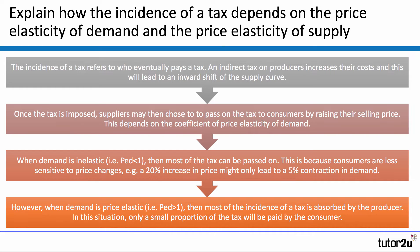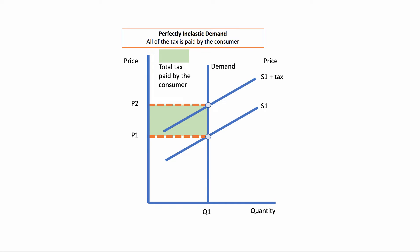However, when demand is price elastic — a coefficient of more than one — then most of the incidence of a tax is absorbed by the producer. In this situation, only a small proportion of the tax is paid for by the consumer. We can support the answer with a diagram. Here I've drawn a perfectly inelastic demand — a vertical demand curve — with a tax imposed on the supplier. The price has gone up from P1 to P2 by the full amount of the tax, which is the vertical distance between the two supply curves. Therefore, in this case, the incidence of the tax falls completely on the consumer, because elasticity is 0.